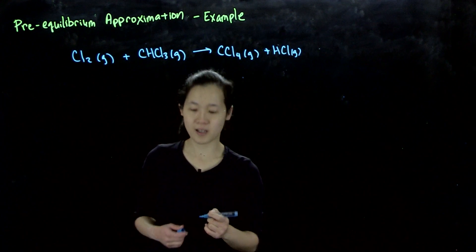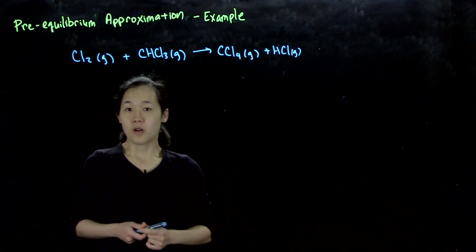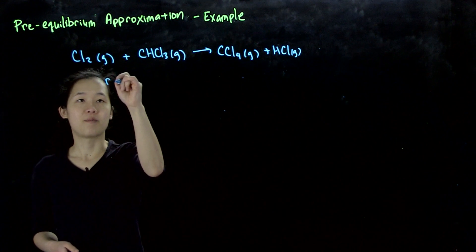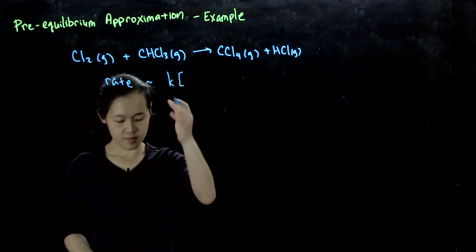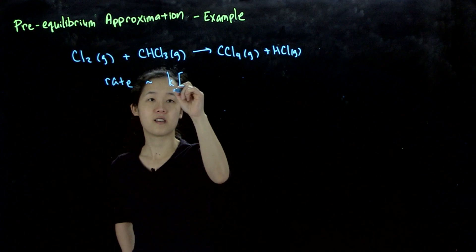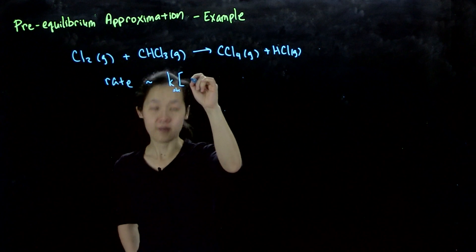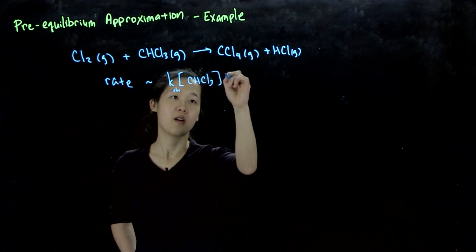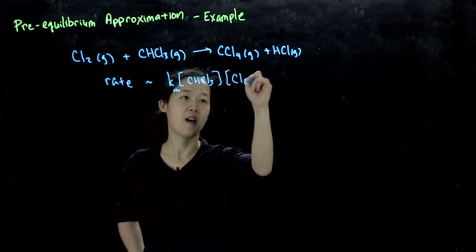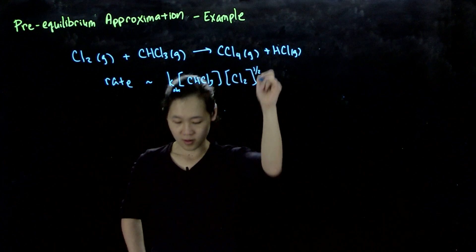This looks like a relatively nasty reaction. You measure the rate and your observed rate law is some k_observed, and then we have first order dependence in chloroform and half order in chlorine gas.